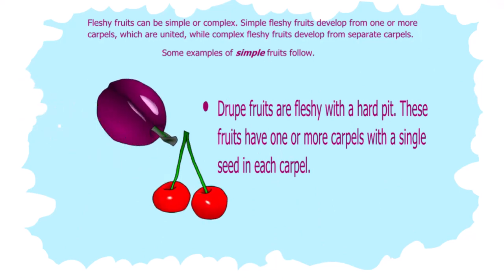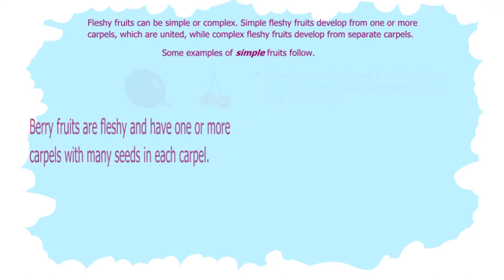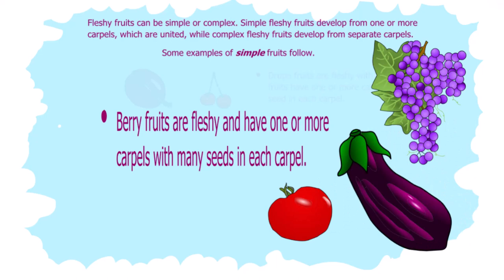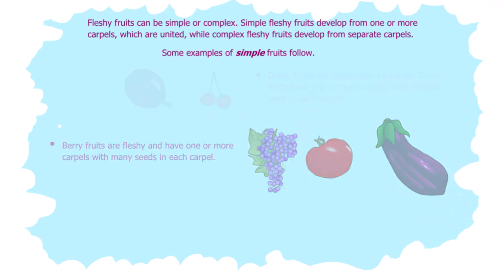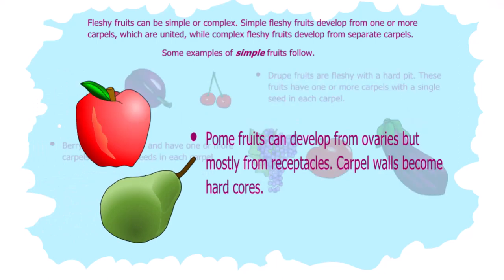Simple fruits. Drupe fruits are fleshy with a hard pit. These fruits have one or more carpels with a single seed in each carpel. Berry fruits are fleshy and have one or more carpels with many seeds in each carpel. Pome fruits can develop from the ovaries, but mostly from the receptacles. Carpel walls become hard cores.